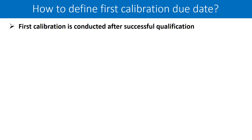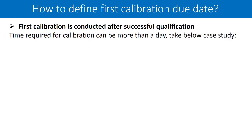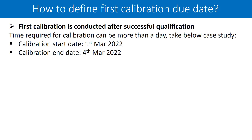The first calibration is conducted after successful qualification, as explained earlier. Now, most of the time, for complex calibration processes, you may require more than one day to complete the calibration activity. For example, an HPLC calibration cannot be completed within just one day. Let us take the following example as a case study. The calibration start date is 1st March 2022, and the calibration end date is 4th March 2022 — it took 4 days for completion.